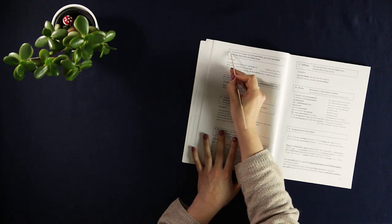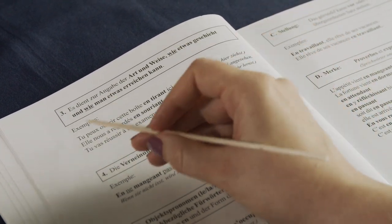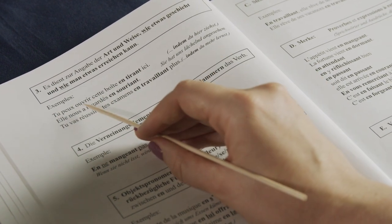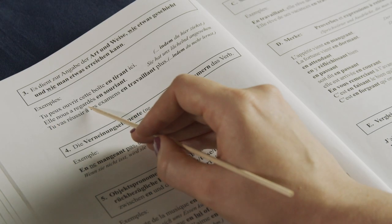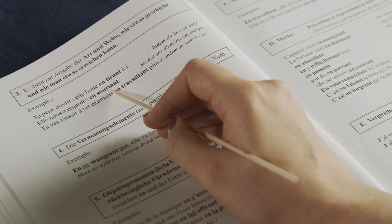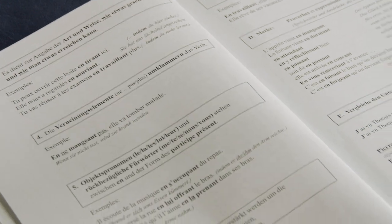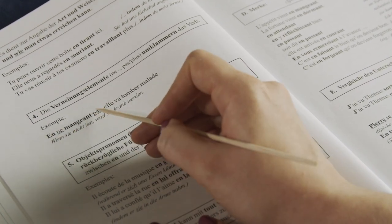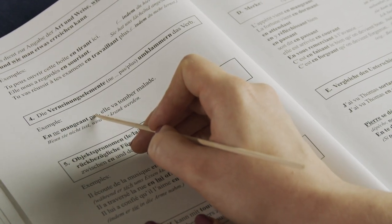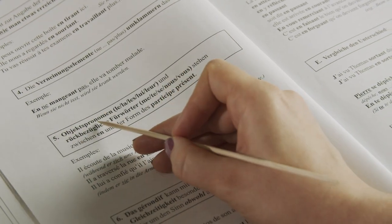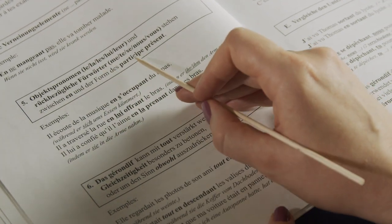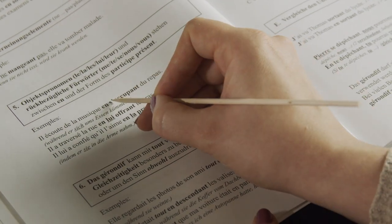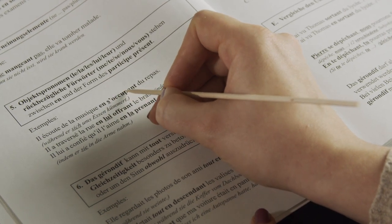Then, three: it tells you how something happens or how you can achieve something. For example, tu peux ouvrir cette boîte en tirant ici. You can open this box by pulling here. Elle nous a regardé en souriant. She looked at us smiling. Then it gives you some information like how to form a negation: en ne mangeant pas. So you put the ne pas on either side of the verb. And five, it tells you where to put the pronouns. They are between the en and the form of the participe présent. So for example, il écoute de la musique en s'occupant du repas. So the se comes in here before occupant.